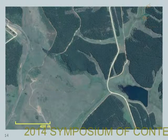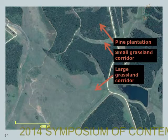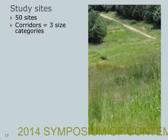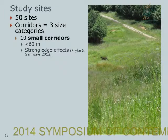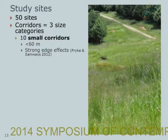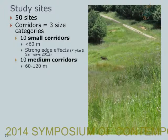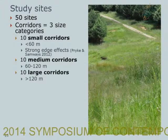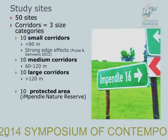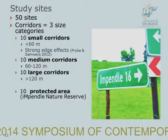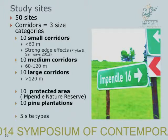This is an aerial photograph of one of the plantations I worked in, the Drakenners pine plantations. This would be a small corridor and this is a large corridor. I had 50 sites and split my corridors into three size categories: ten small corridors which were less than 60 meters, which would suffer very strong edge effects; ten medium corridors which were 60 to 120 meters; and ten large corridors which were more than 120 meters. I also had ten sites in the nearby protected area, Nendley Nature Reserve, which functioned as a reference site, and ten sites in pine plantations, making up five site types.